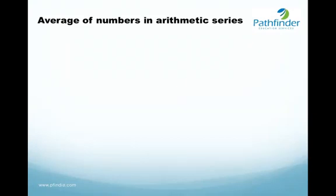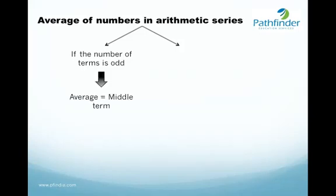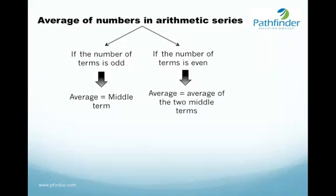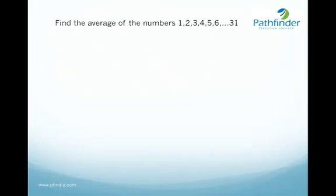Now, what about the average of numbers in an arithmetic series? If the number of terms in an arithmetic series is odd, then the average is simply the middle term. If the number of terms is even, then the average is equal to the average of the two middle terms. Let's look at an example: find the average of 1, 2, 3, 4, 5, 6, and so on till 31.